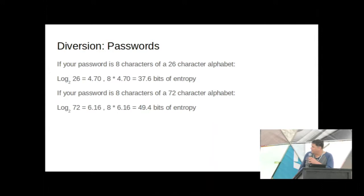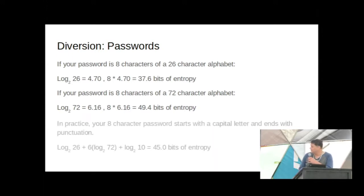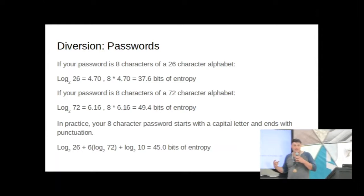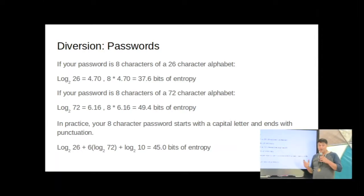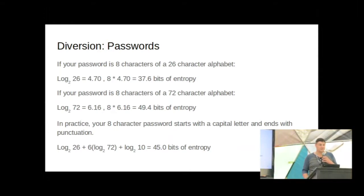If your password is eight characters of a 72-character alphabet — that's upper, lower, special characters — it gives you just about 50 bits of entropy. That dramatically increased it; two to the 50th is a lot bigger. But if I know something about your password, the entropy measurement changes. So if I know that it starts with a capital letter and ends with punctuation, there's roughly 45 bits of entropy — you just lost some information in your password.